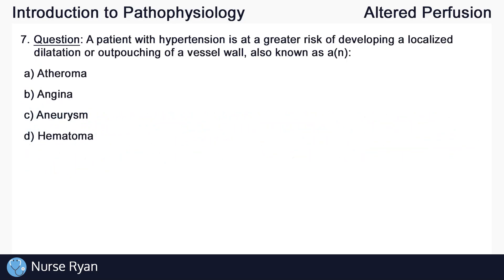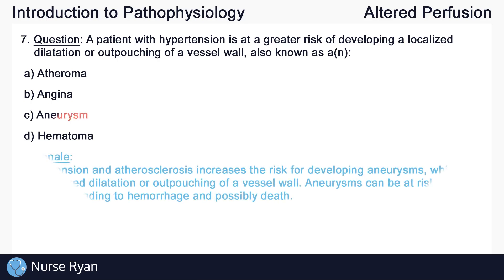Question number seven: a patient with hypertension is at a greater risk of developing a localized dilation or outpouching of a vessel wall, known as an aneurysm. Hypertension and atherosclerosis increase the risk for developing aneurysms. Aneurysms can be at risk of rupturing, leading to hemorrhage and possibly death.